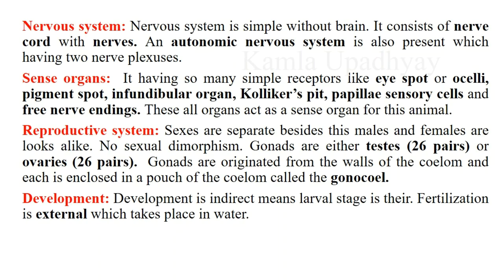Regarding the reproductive system, sexes are separate but males and females look alike — no sexual dimorphism. Gonads are either testes (26 pairs) or ovaries (26 pairs). Gonads originate from the wall of the coelom and each is enclosed in a pouch of the coelom called a gonocoele. Development is indirect with a larval stage, and fertilization is external, always taking place in water.